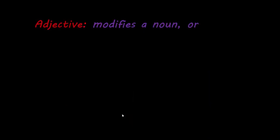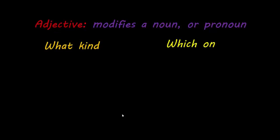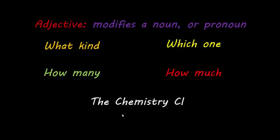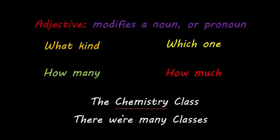Next, we're going to discuss the adjective. An adjective is a word, phrase, or clause that modifies a noun or pronoun. These tend to answer four questions: what kind, which one, how many, and how much. An example would be 'the chemistry class' — what type of class is it? A chemistry class. Or 'there were many classes' — how many classes were there? Many would be your adjective.